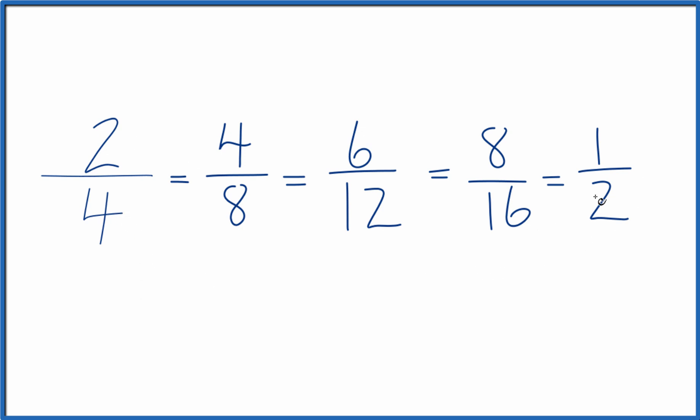If we wanted to write these as ratios, we could write them like this. 2 to 4, 4 to 8, and so on. And all these are equal, they're the same ratio.